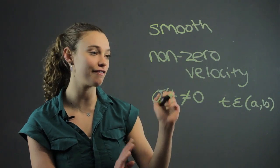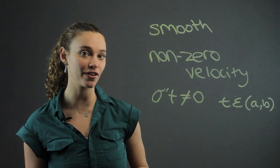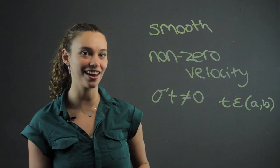So if there's any point on the curve where the velocity is zero, it is not a regular curve. It's a different type of curve and you cannot classify it in that category.